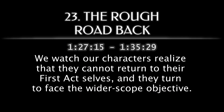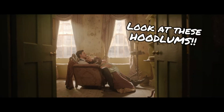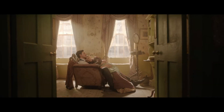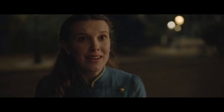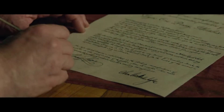We watch our characters realize that they cannot return to their first act selves, and they turn to face the wider-scope objective. Enola deduces the true rebellious motives of William and Sarah, and declares her love openly for Tewksbury. The Holmeses team up in the match factory as their cases collide again, and they deduce the full scope of the overall conspiracy, yet discover that the murder scene has been staged.